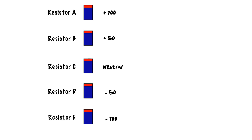This is just like the cups. We're going to look at these with respect to the neutral element and then talk about them with respect to each other. We see that plus 50 and plus 100 — treating neutral like zero — are positive. So with respect to resistor C, resistors B and A are both positive. We have negative 50 and negative 100, which means that with respect to resistor C, resistor D is negative and resistor E is negative.